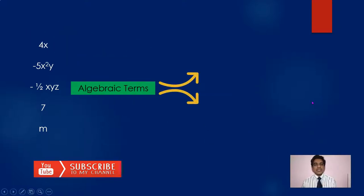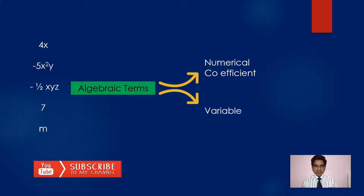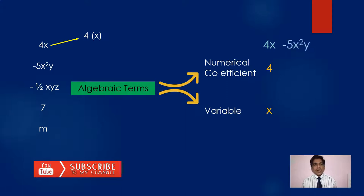Now every algebraic term has two different parts — numerical coefficient and variable. For example, in 4x, which is 4 multiplied by x, the 4 is the numerical coefficient and x is the variable. Another example: minus 5x²y. Here, minus 5 is the numerical coefficient and x²y is the variable part.